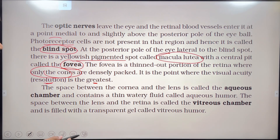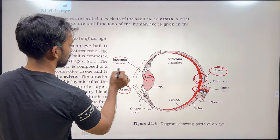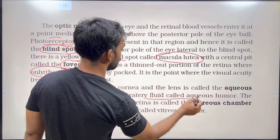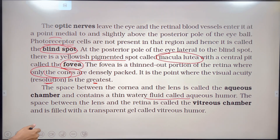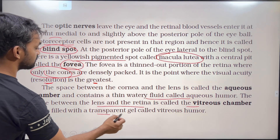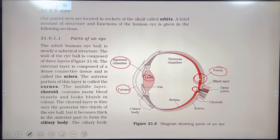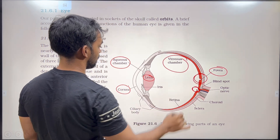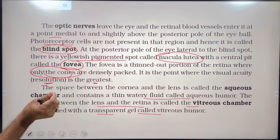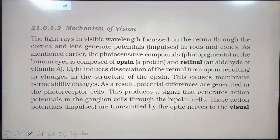The space between the cornea and the lens is called the aqueous chamber, and it contains a thin watery fluid called aqueous humor. The space between the lens and the retina is called the vitreous chamber, and it is filled with a transparent gel called vitreous humor.